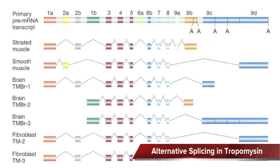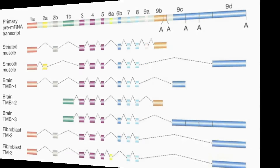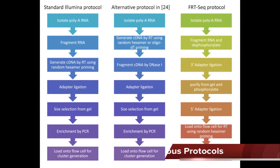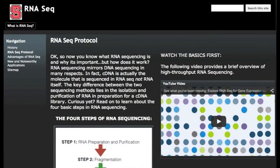What separates RNA-seq from traditional DNA sequencing methods is the ability to identify alternative splicing and allelic expression levels by using cDNA as a reference. Each step is absolutely vital for a successful sequencing experience. These are general steps — the protocol varies based on the purpose of the experiment. To find out more about RNA-seq procedures, visit the protocol page featured on our RNA-seq website.